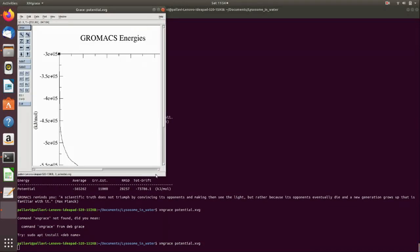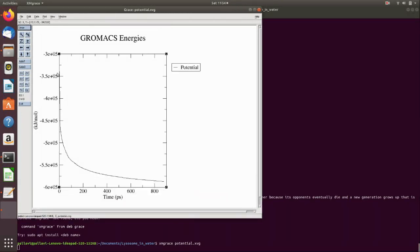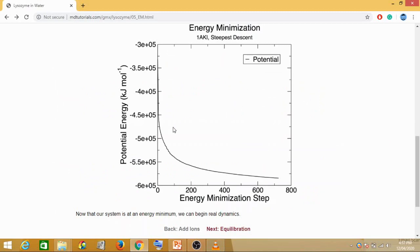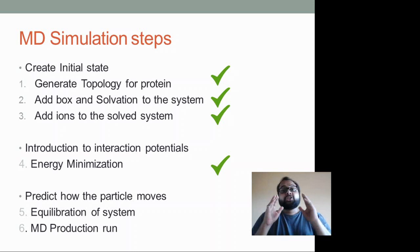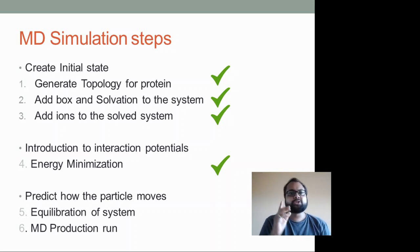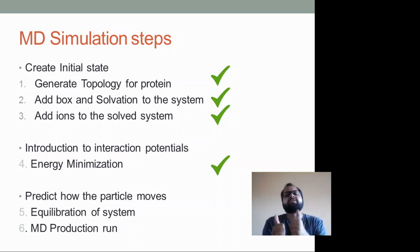We visualize the result by running 'xmgrace potential.xvg'. The graph opens showing the potential energy decreasing over steps. If the energy had gone flat or increased, that would indicate the energy minimization was incorrect. Since our energy graph is coming down, our energy minimization for the protein is successful.